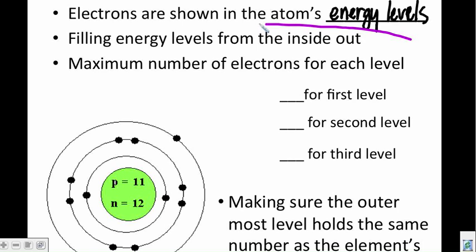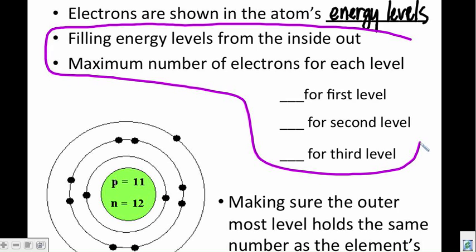Here's our two new pieces of information today. We need to make sure that we take these two new rules into account. First, when we put our electrons on, we want to fill the energy levels from the inside out. So starting with the first shell, the second, and then the third, and so on down the line. We're going to stick with atoms that have no more than three shells for our beginning here.